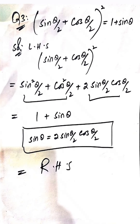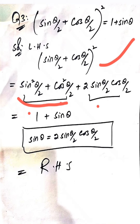Our last question is that (sin(θ/2) + cos(θ/2))² = 1 + sin θ. We take the left hand side and apply the formula (a + b)² = a² + 2ab + b². We get sin²(θ/2) + cos²(θ/2) + 2 sin(θ/2) cos(θ/2). Here sin²(θ/2) + cos²(θ/2) = 1, and 2 sin(θ/2) cos(θ/2) = sin θ.